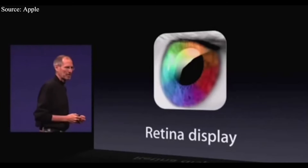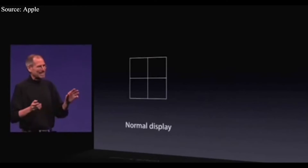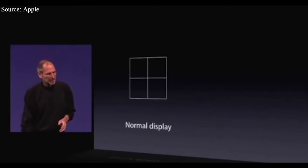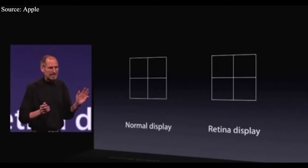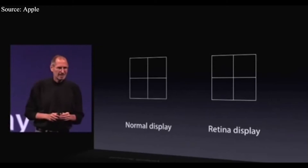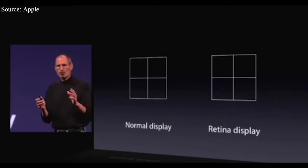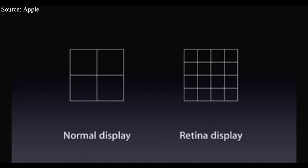Moving on to Apple's own Retina Display. In any display there are pixels — here are four of them. The Retina Display dramatically increases the pixel density — four times as many pixels in the same amount of space.